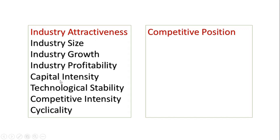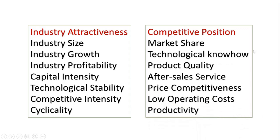Now let's look at the components that fall under competitive position, also called business strength: market share, technological know-how — meaning whether your business unit is technologically sound or not — product quality, after-sales service, price competitiveness, low operating cost, and productivity. All of these fall under competitive position or business strength.